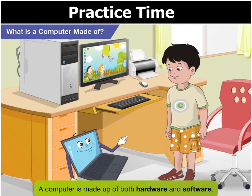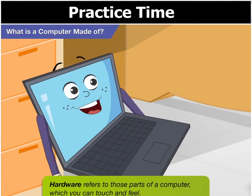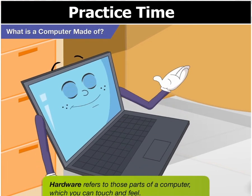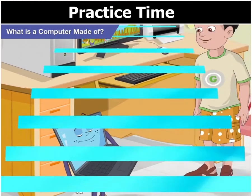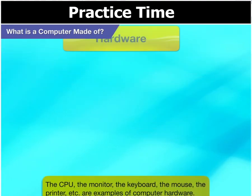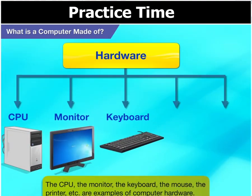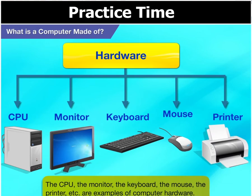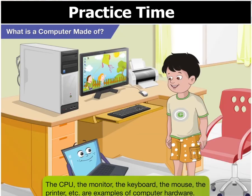Basically, a computer is made up of both hardware and software. Hardware refers to those parts of a computer which you can touch and feel. The CPU, the monitor, the keyboard, the mouse, the printer, etc. are computer hardware.